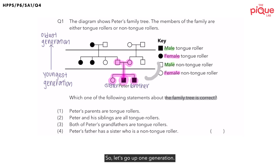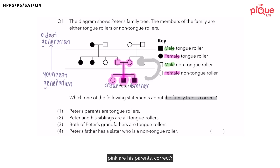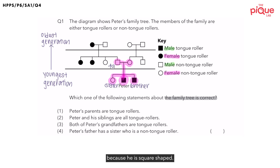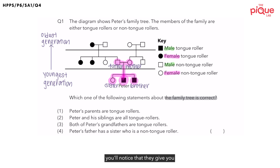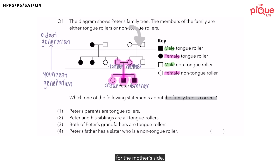Let's go up one generation. These two people highlighted in pink are his parents. The person on the left is the father because he is square shaped, and the person on the right is the mother because she is a circle shape. If you take a look at this diagram, you'll notice that they give you the family tree for the father's side as well as the family tree for the mother's side.